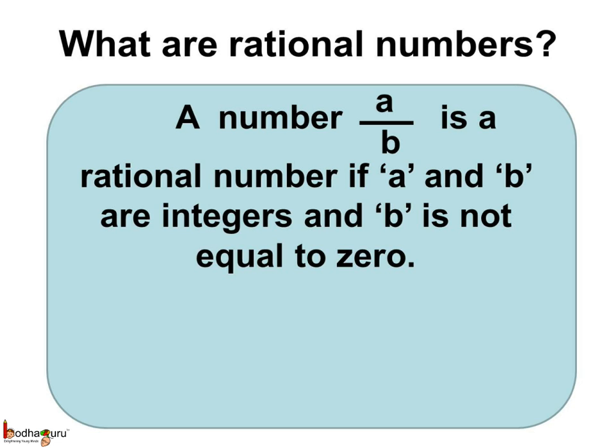In short, a number, a by b is a rational number if a and b are integers and b is not equal to 0.